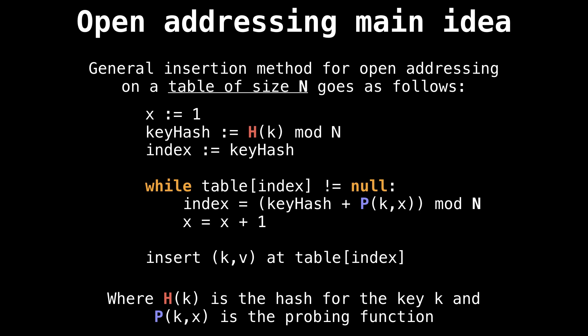Every time that happens, we're going to offset the key hash using our probing function, which in our case is going to be a quadratic function. Then we also increment x and eventually we will find an open slot to insert our key value pair.